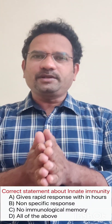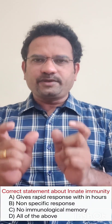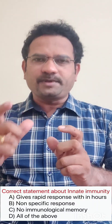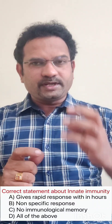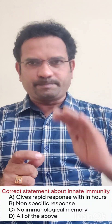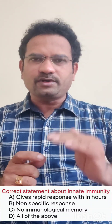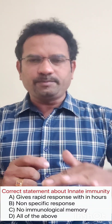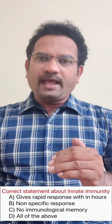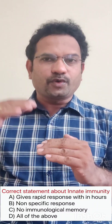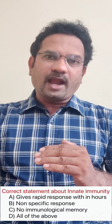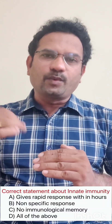Let us understand about innate immunity. We have two branches of immunity: innate immunity and acquired or adaptive immunity. Innate immunity is the immunity we get right from our birth — from the mother we get a certain amount of immunity, that is called innate or inborn immunity. Adaptive or acquired immunity is the immunity we develop when we grow up.